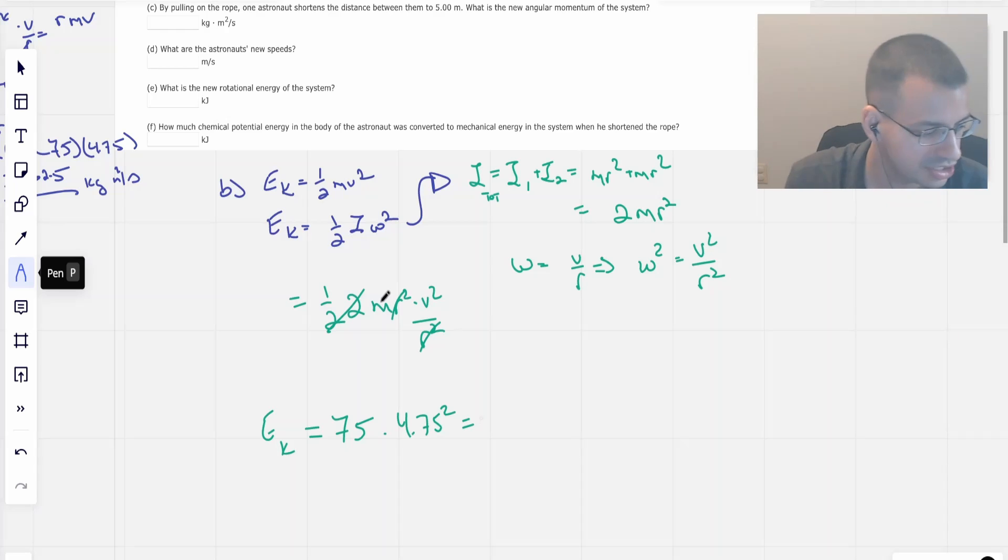And it's not coincidence that we basically got back to the linear equation. The ideas are related. 75 times 4.75 squared. So I get 1692.